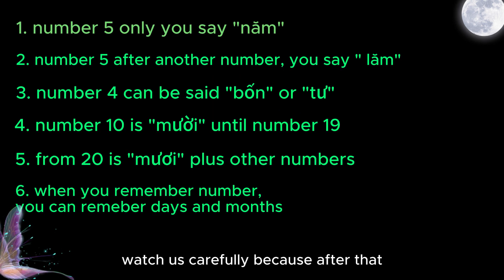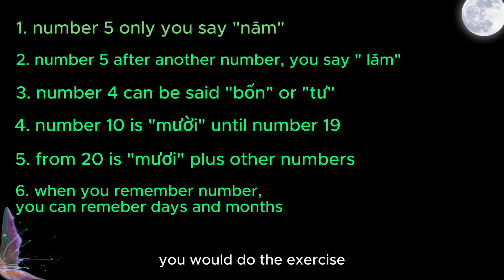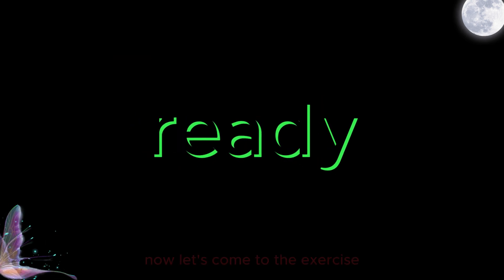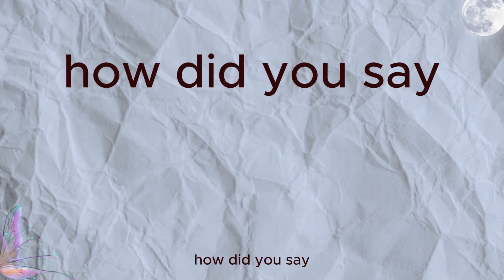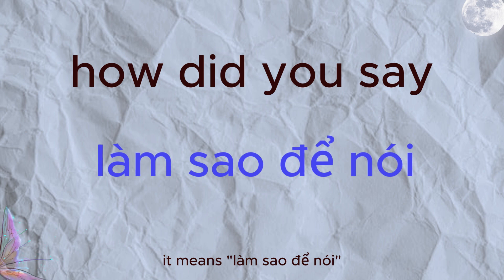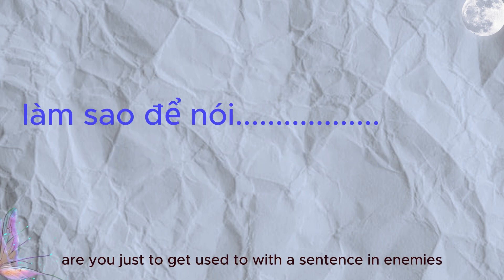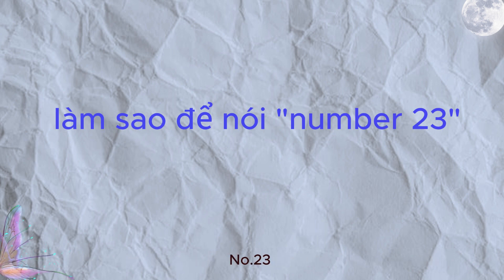So take a look at all the things I take notes here. Watch this carefully because after this you will do the exercise. Like I said, pay attention much to the range from 1 to 10. Now let's come to the exercise. I will say how do you say, it means làm sao để nói in Vietnamese.